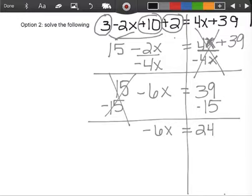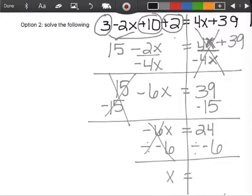So I have negative 6x equals 39 minus 15 is 24. The last thing I have to do is to get rid of this negative 6 that is attached to my x. When you want to get rid of something that is attached to the x, you always have to divide by that number. We will divide by negative 6 to cancel it out. So x equals 24 divided by negative 6, negative 4. There's our answer for our first one.